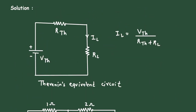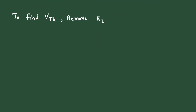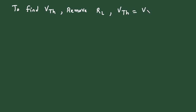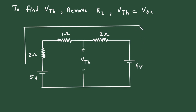Now next, let's find the value of Vth. To find Vth, again we have to remove RL, and here we can write Vth equal to VOC — that is open circuit voltage equals Vth. So if we remove this load resistor, this will be our Vth or open circuit voltage. Now to find Vth, let's apply KVL to the outer loop of this circuit. Let's say this is current capital I, and according to this current I direction, let's assign the signs.